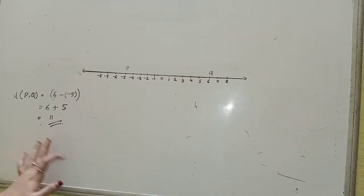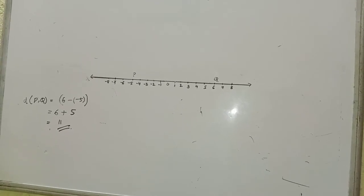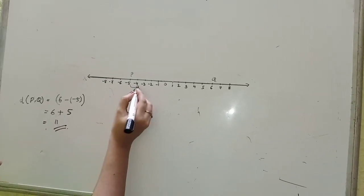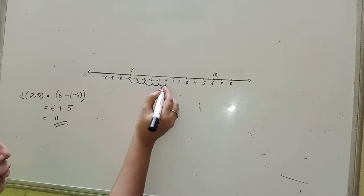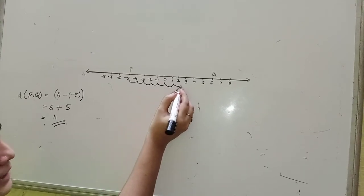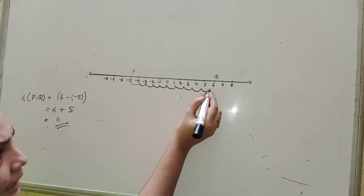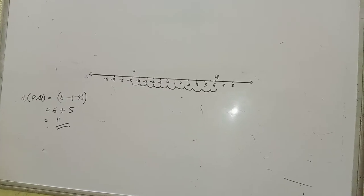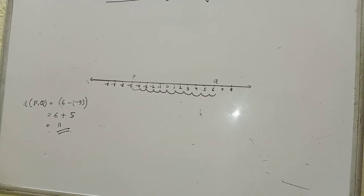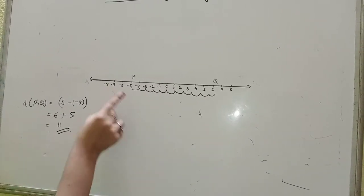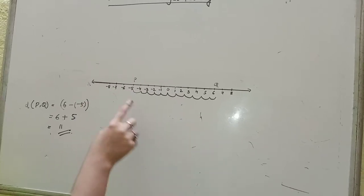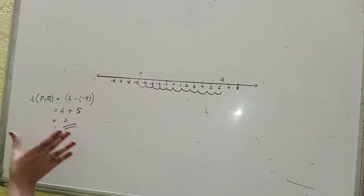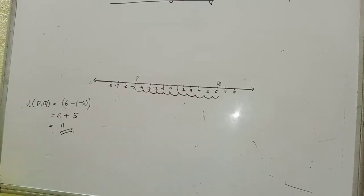This is the easier way to find the distance. As we count from here — 1, 2, 3, 4, 5, 6, 7, 8, 9, 10 and 11 — we get 11 units. So we will not do this counting every time to find the distance. This subtraction method is the simple way to find the distance.